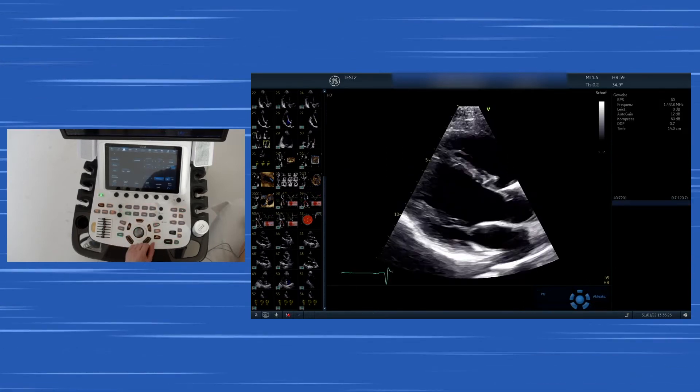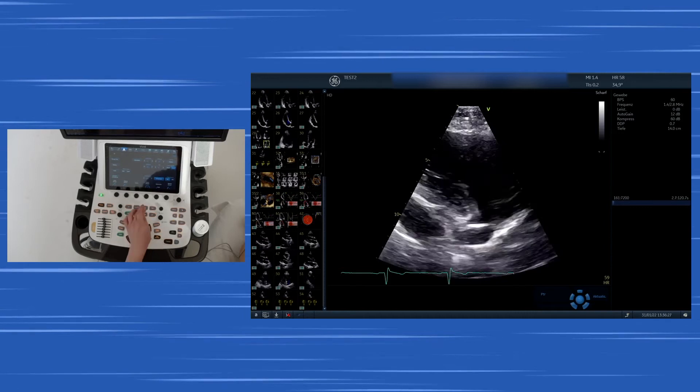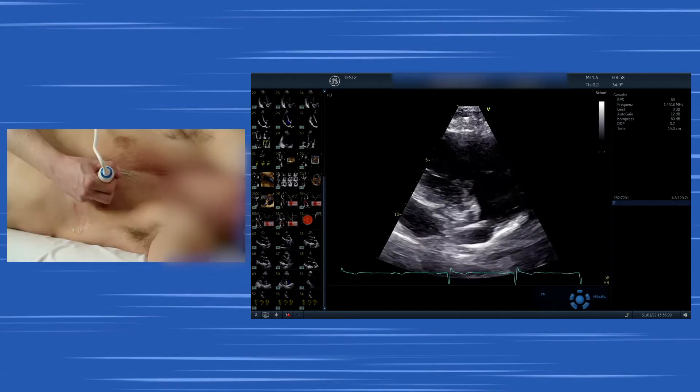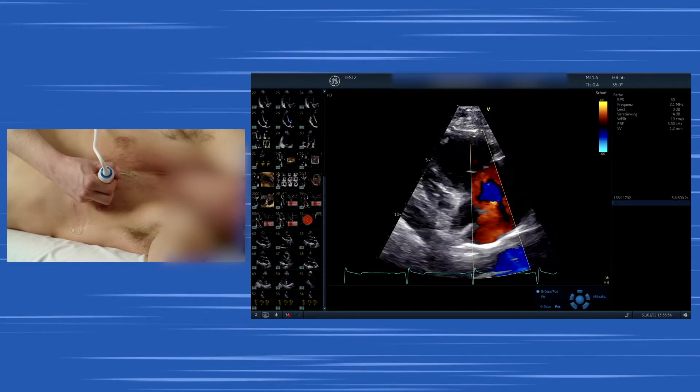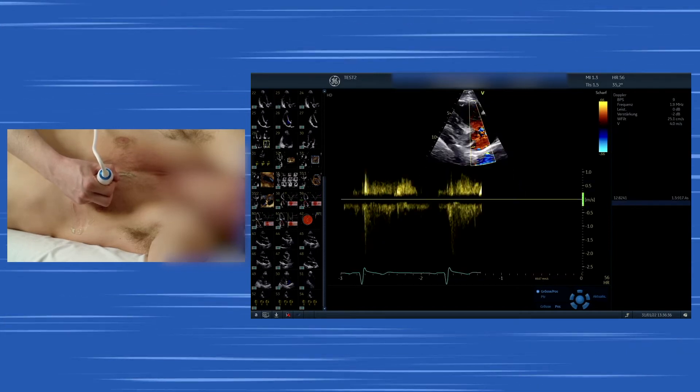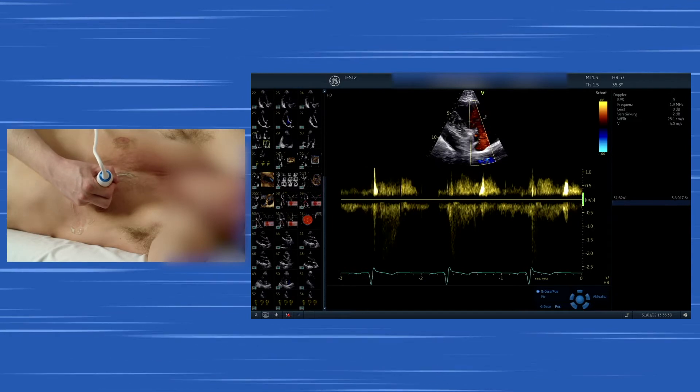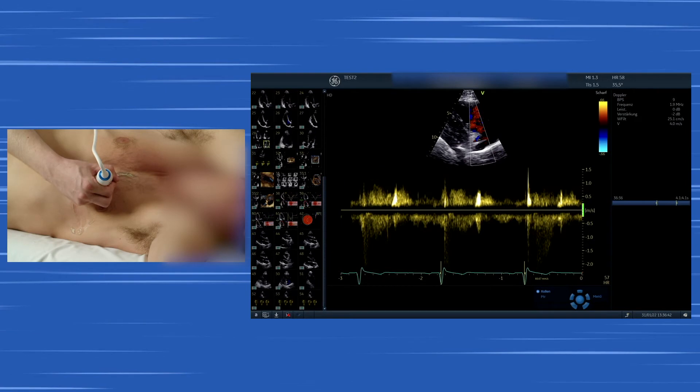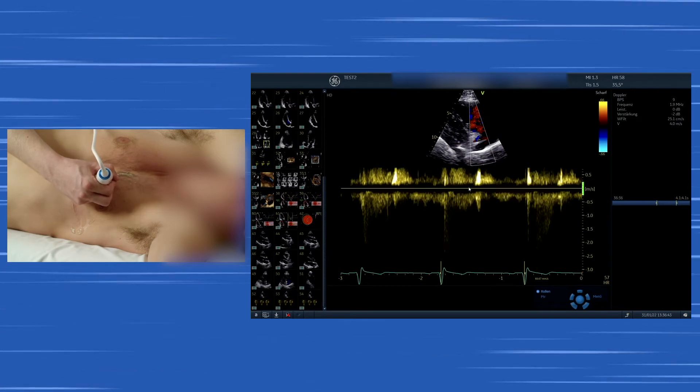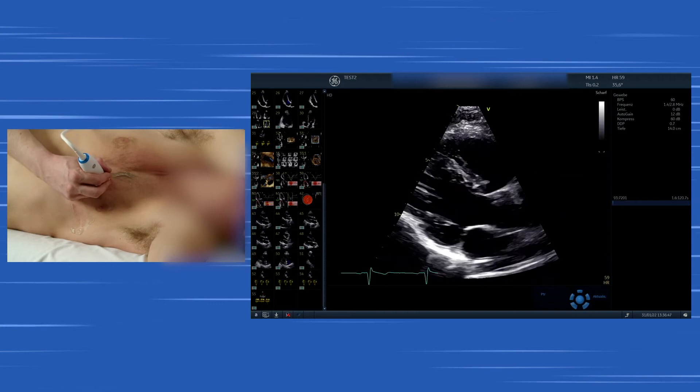Going back to tilting the transducer downwards, you see the right ventricle and you can start adding the color Doppler. You see the right ventricle in the top of the screen, the right atrium at the bottom of the screen, and you can activate the continuous wave Doppler where you can measure tricuspid regurgitation. As it doesn't have large tricuspid regurgitation, you cannot measure it here.